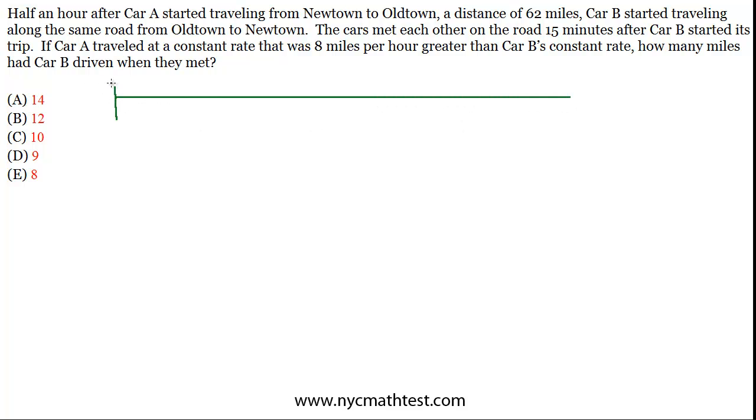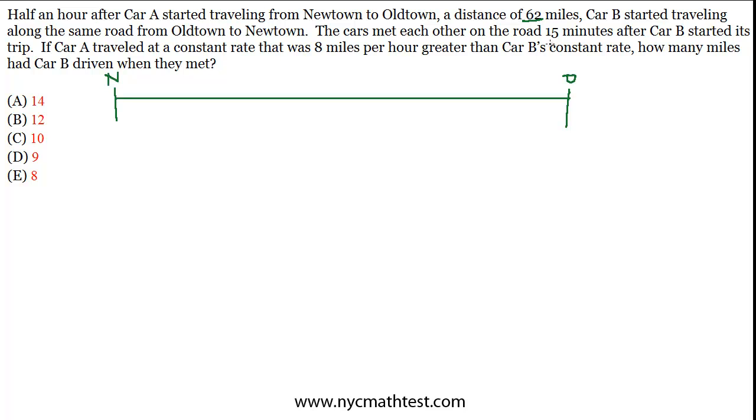We got Newtown, Oldtown. And the distance between the two is 62 miles. So car B starts traveling from Oldtown to Newtown after car A starts traveling from Newtown to Oldtown. Let's put A at the starting line over here going this way, and B at the start line over here headed that way. Their takeoff times are separated by 30 minutes.